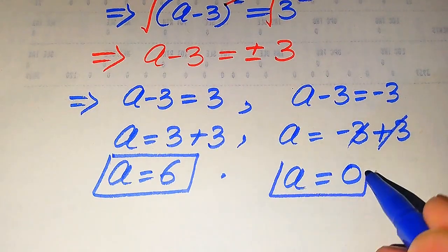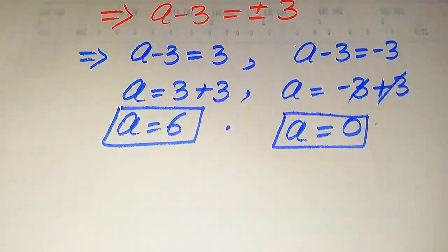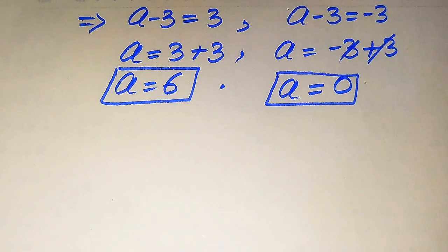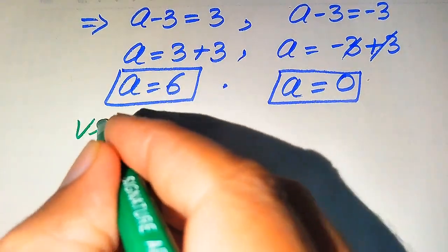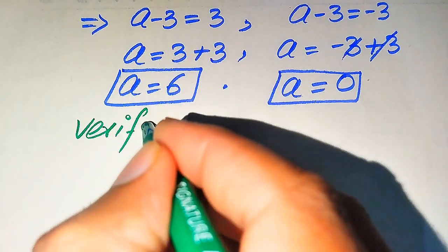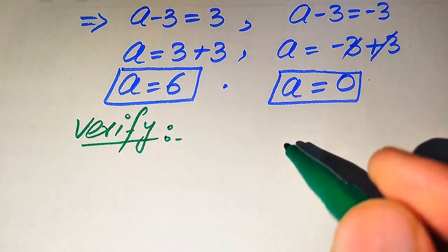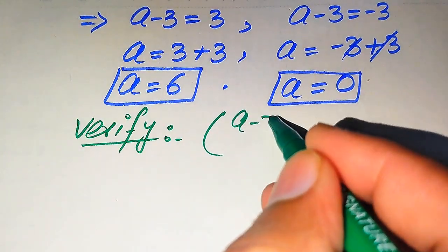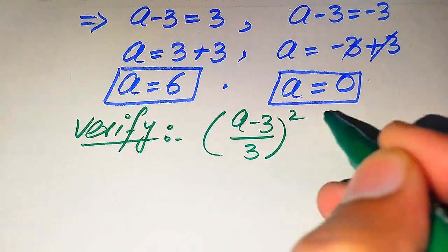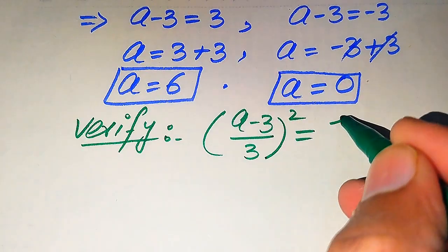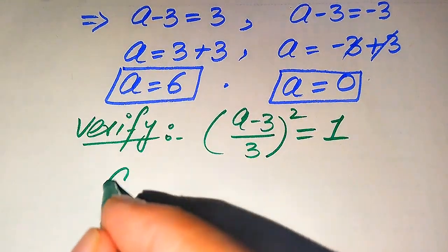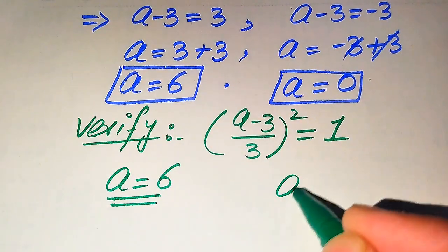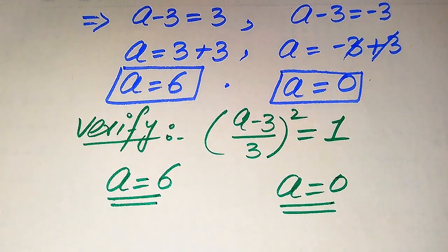We now have two roots: a equals 6 and a equals 0. In the next steps we need to verify whether each root is a solution or an extraneous root. For verification we substitute each root back into the original equation: (a minus 3) divided by 3, whole squared, equals 1.